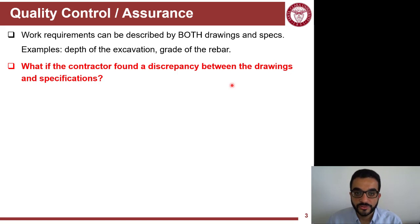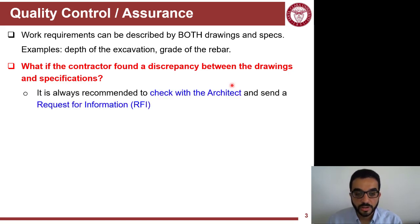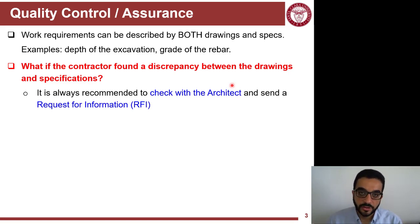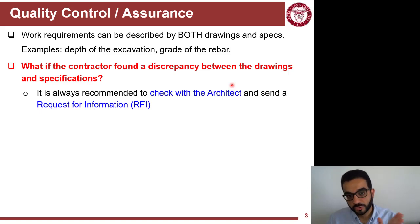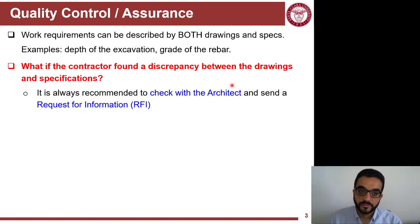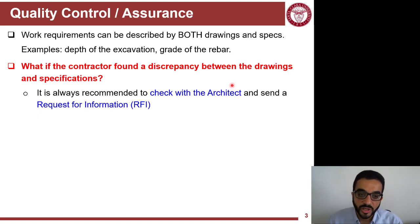The question here is: what happens if there is a discrepancy between drawings and specifications? It's always better to send an RFI to the architect to clarify any confusion. But let's say you didn't catch this conflict, and you comply with the requirement in one document, which is a different requirement for the same aspect in the other document. So you have a conflict here.